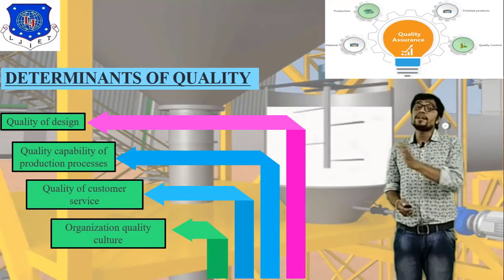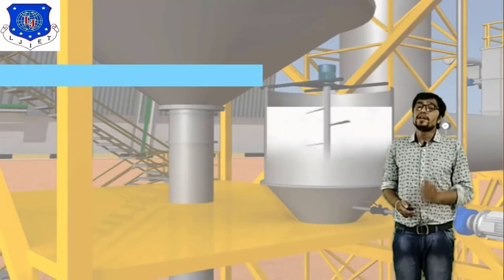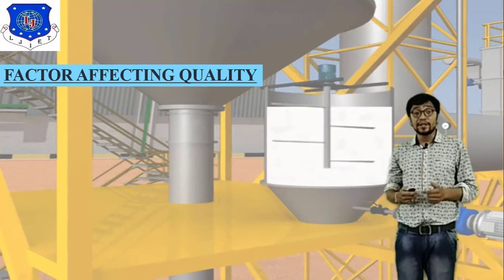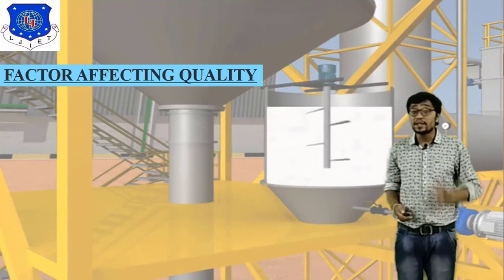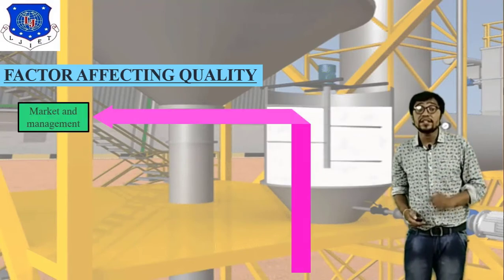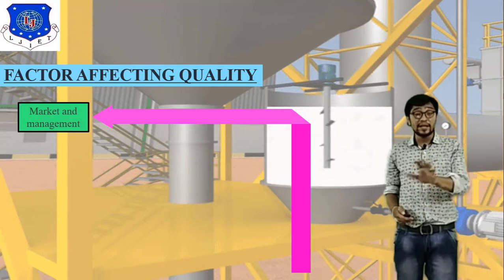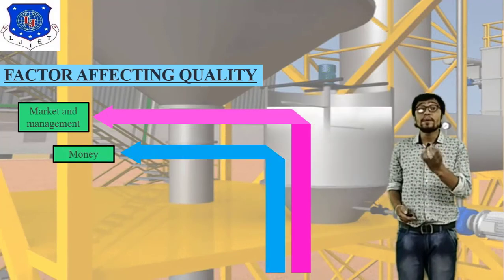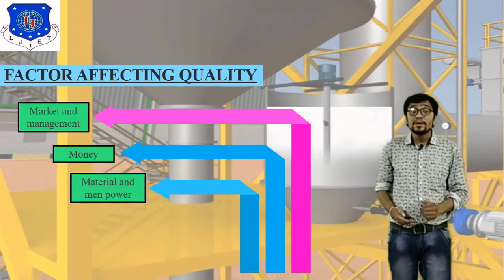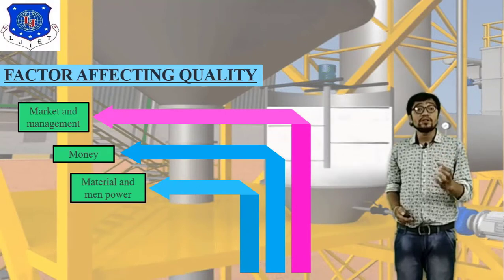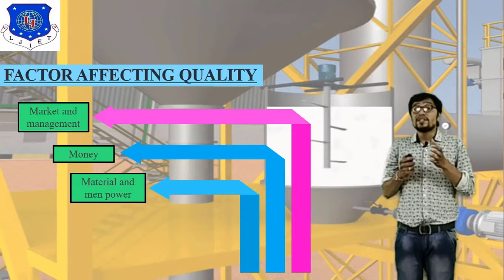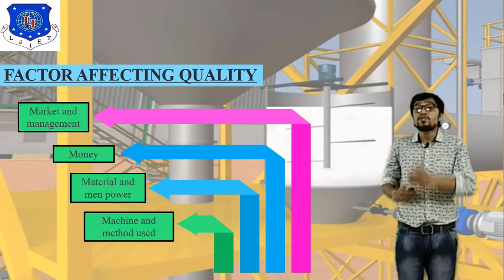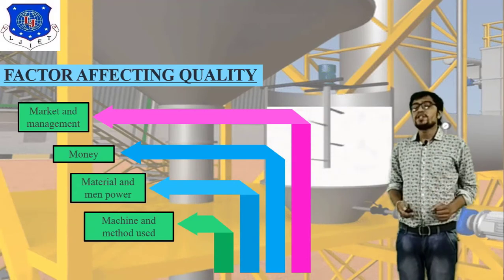The next important question is: factors affecting quality. There are various factors. First, market and management — the integration of market and management purpose. Second, money — the arrangement of money is very important. Third, material and manpower — material is the basic thing, and manpower relates to skilled workers and skilled labor. Fourth, machine, and the method you use. These are the different factors affecting quality.